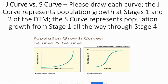Population grows exponentially — producing a J-curve — while food supply grows only arithmetically, looking more like a straight diagonal line. Malthus believed this would lead to mass starvation and wars over food. What Malthus didn't know was that countries go through demographic transition.